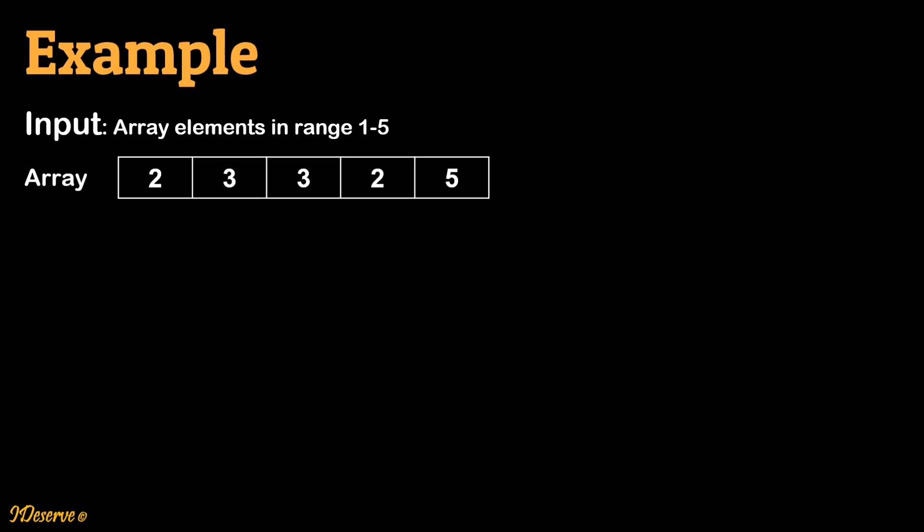Let's take one example to understand the problem. Consider the input array with elements 2, 3, 3, 2, 5. The expected output should look like: since element 1 is not present, print 1 0. Since element 2 is present 2 times, print 2 2. Similar is the case for element 3. Since 4 is not present, print 4 0. Finally, since element 5 has 1 occurrence, print 5 1.